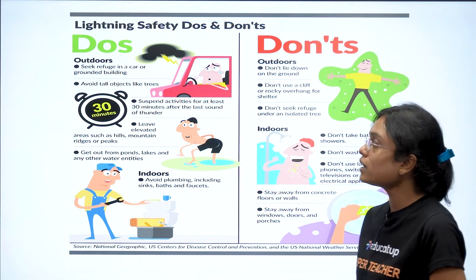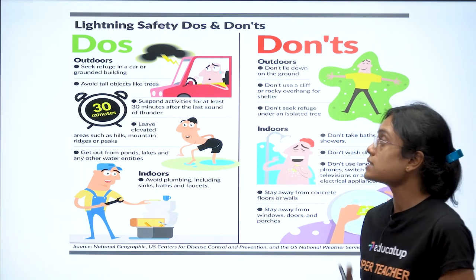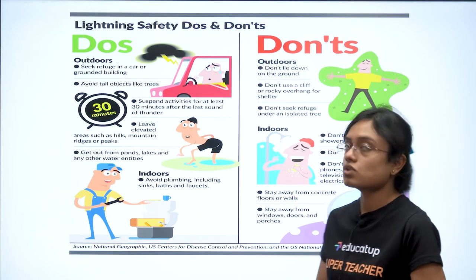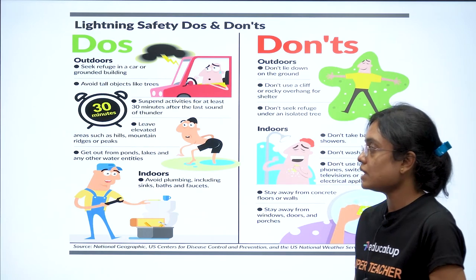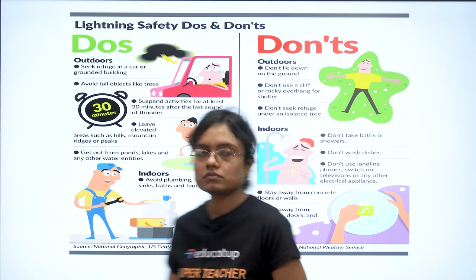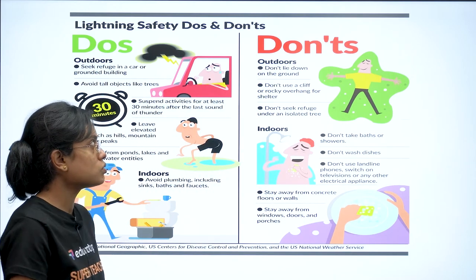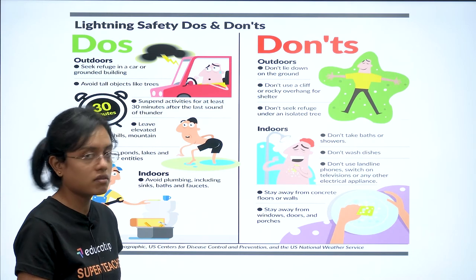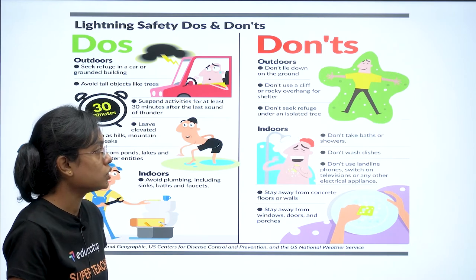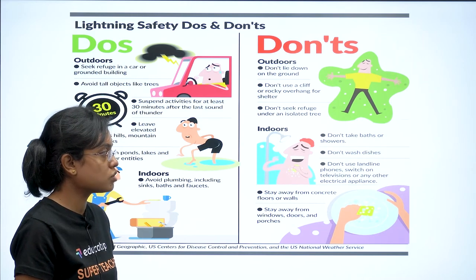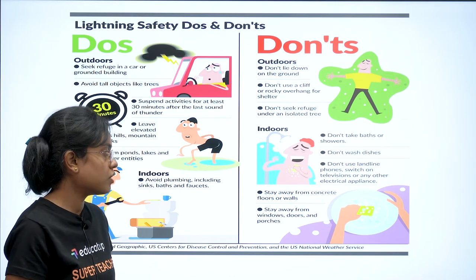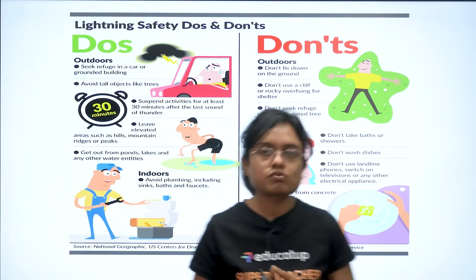Lightning safety do's and don'ts: if outdoors, seek refuge in a car or a grounded building, avoid tall objects like trees, and suspend activities for at least 30 minutes after thunder. Leave elevated areas such as hills, mountain ridges, or peaks. Get out of ponds, lakes, and other water bodies. Indoors, avoid plumbing including sinks, baths, and faucets. Don't lie on the ground, don't shelter under isolated trees, don't take baths or use landline phones, and stay away from windows, doors, and concrete floors or walls.